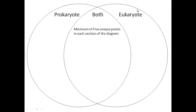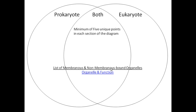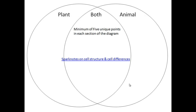You were supposed to use a Venn diagram with prokaryotic on one side, eukaryotic on the other, and the shared traits in the middle — minimum five unique points for each section. I'd like you to go through your notes or reviews and find those yourself. There's also a site from the cell city activity listing membranous and non-membranous bound organelles. You can click those links and I'll put the link in the comments. You were also supposed to describe the differences and similarities between plant and animal cells. There's a Spark Notes link for that as well.